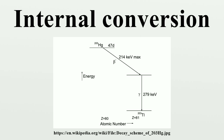Internal conversion is possible whenever gamma decay is possible, except in the case where the atom is fully ionized. During internal conversion, the atomic number does not change, and thus no transmutation of one element to another takes place.